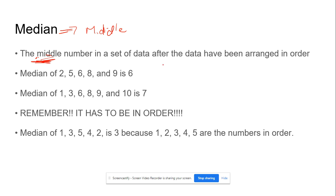The middle number in a set of data after the data have been arranged in order. The median of 2, 5, 6, 8, and 9. When we go through and eliminate the first and last number, we eliminate the second and second last number, the middle number is 6.